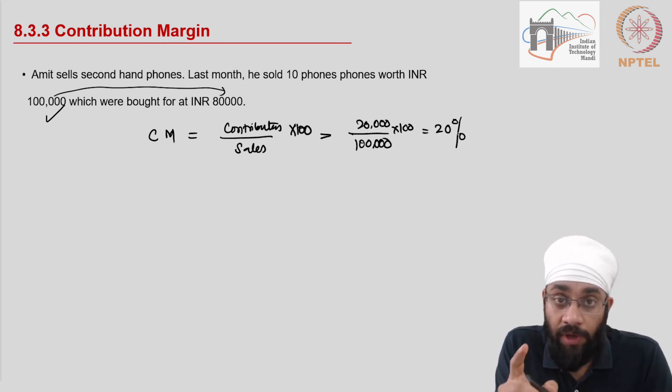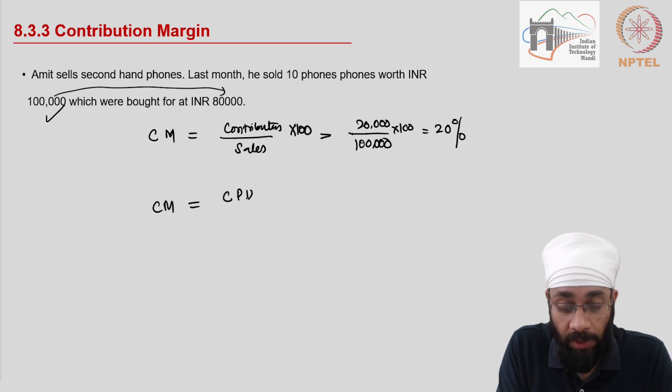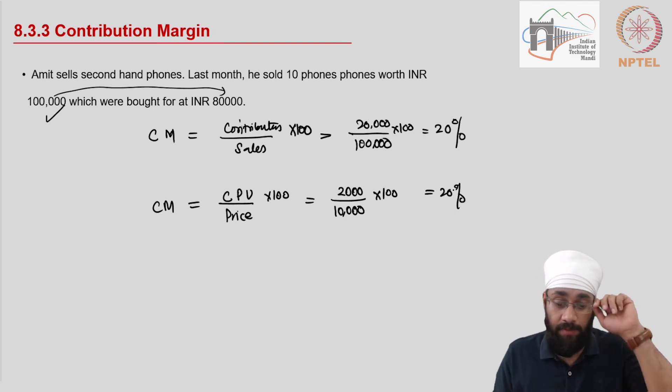Another way to figure out contribution margin is as follows. We could also use contribution per unit and sale per unit, which is price. Simply we are dividing this equation by the number of units, into 100. So contribution per unit was 2,000 as we calculated earlier, and the price per unit is 10,000, gives you the same number again - basic arithmetic.